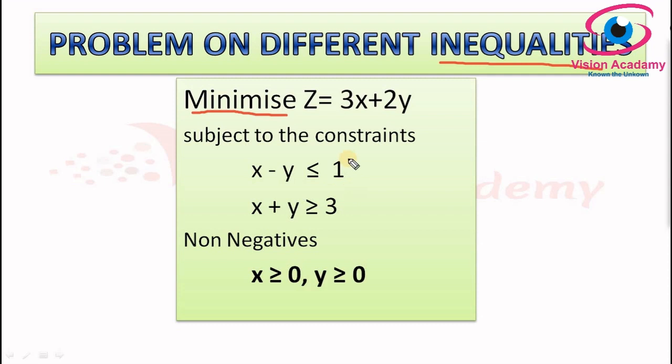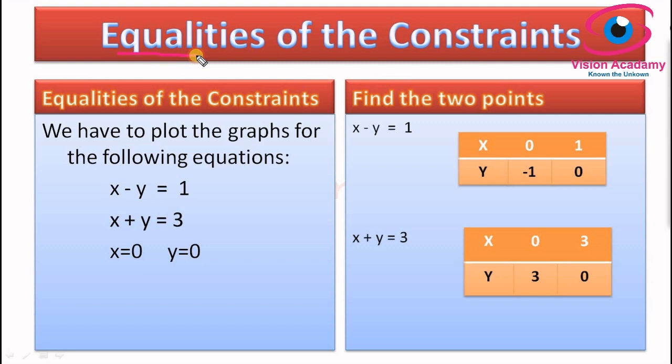We have two decision variables, so we can go for graphical solution. I have removed the inequalities and converted them into equalities — removing the lesser than or greater than type — just to find two intercept points for each constraint. So: x minus y equals 1, and x plus y equals 3, setting x equal to 0 and y equal to 0.